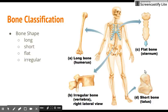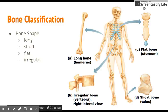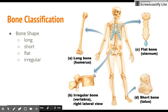Short bones are generally cube-shaped and contain mostly spongy bone — you find these at the wrist and the ankles. Flat bones, shown here, are thin and flattened, usually curved in some way. They generally have two layers of compact bone sandwiching a layer of spongy bone between them. Most of the bones of the skull, the ribs, and the sternum are flat bones. Last but not least, irregular bones don't fit into any of the other categories — for example, your vertebrae are irregular bones.